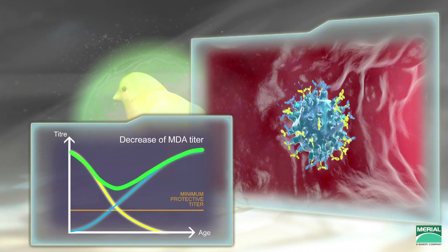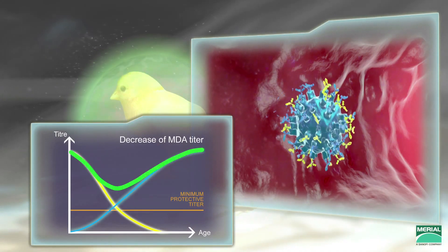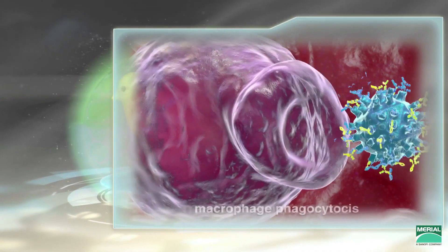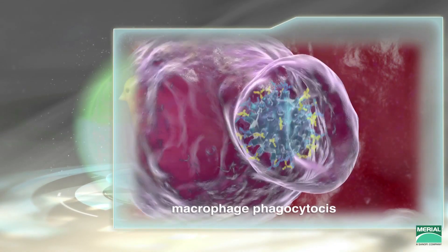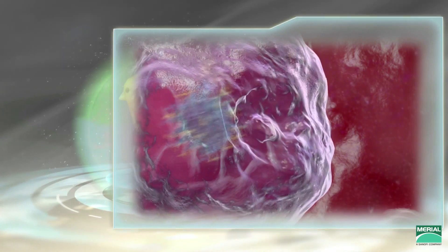The overall level of antibodies will never fall below the protection threshold, thus preventing the field IBD virus from attacking the bursa, whether it is a classic, variant, or very virulent virus.